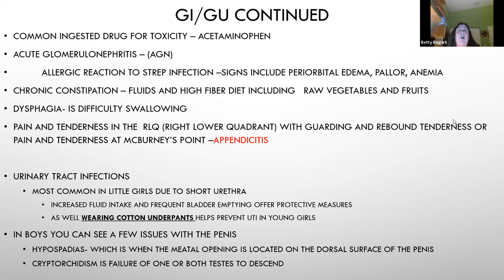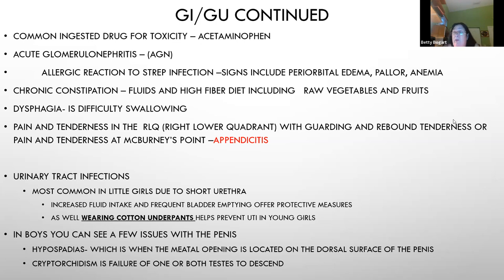Urinary tract infections are very common in little girls due to their short urethra, improper wiping, and bubble baths introducing pathogens to the bladder. Prevention includes increased fluid intake, cotton underwear, and urinating when needed. Boys can get UTIs too but it's less common.